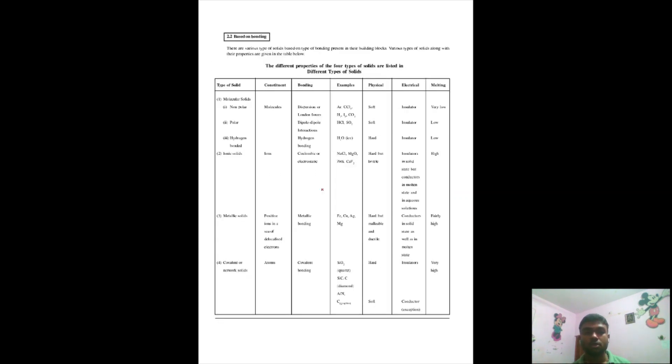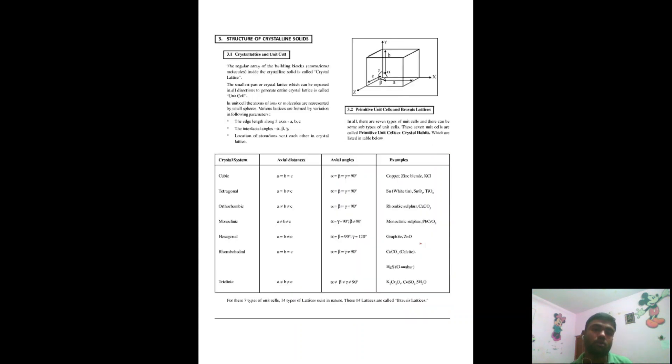You can see that there are different types of bondings in different types of solids. The most strongest being the covalent network solids. You can see it has covalent bonding and highest melting point. These are some of the important points.